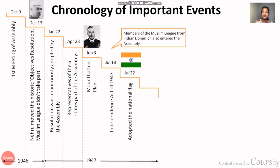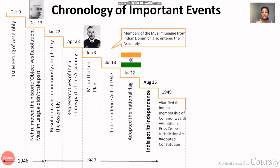India wanted to be part of the international community. After 15th August 1947, in 1949, India had to ratify the membership of the Commonwealth. India wanted to be part of the Commonwealth while still being a sovereign body.